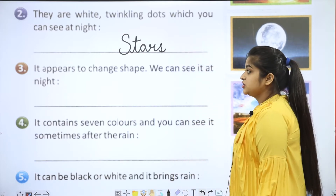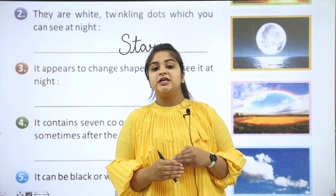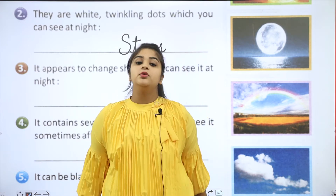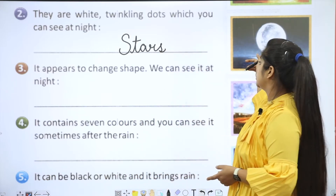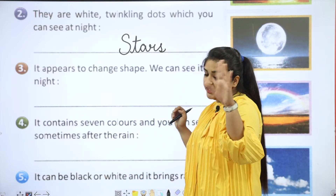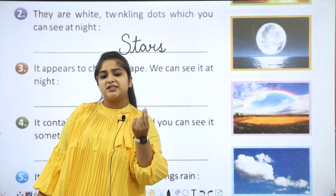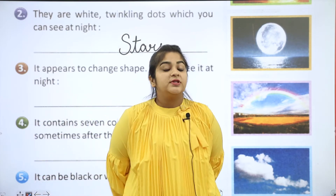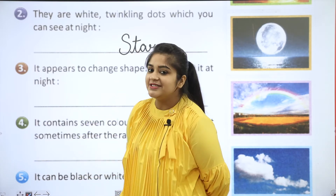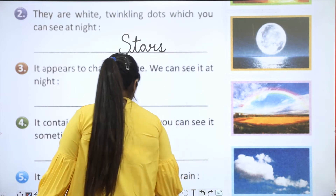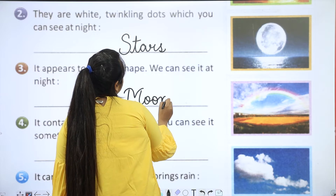It appears to change shape and we can see it at night. What is it? The answer is moon. The moon changes its shape and we see it at night.